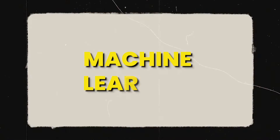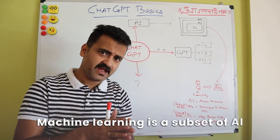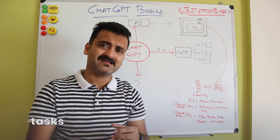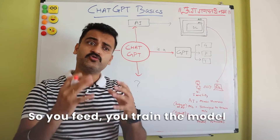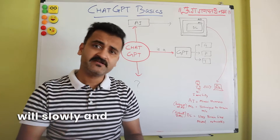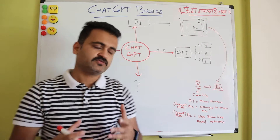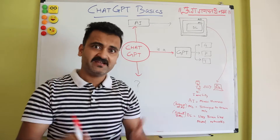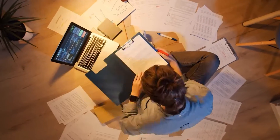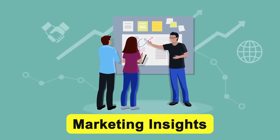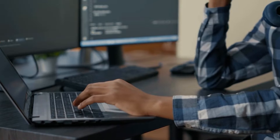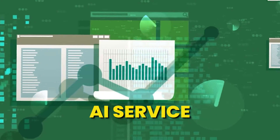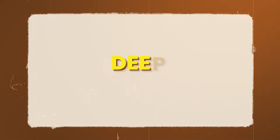Under artificial intelligence we have machine learning. Machine learning is a subset of AI which focuses on training a machine using algorithms to perform certain repetitive tasks. You feed and train the model, tell the machine what to do, and it slowly and gradually learns. For example, suppose you used to daily pull data from multiple CRM systems into Excel, process it with formulas and logic to extract marketing insights — if you encode that understanding into a model, an AI service could perform that whole activity instead of a marketing analyst.